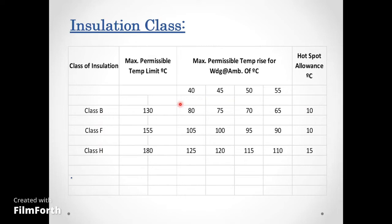For example, at 40°C ambient with an 80°C rise, the total is 120°C. From 120°C to 130°C, the 10°C margin is the hot spot allowance, accommodating localized peak temperatures inside the winding.